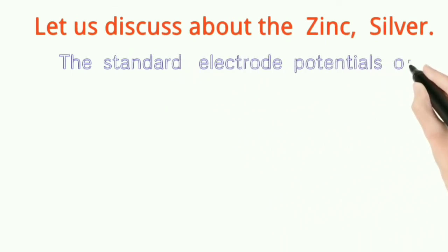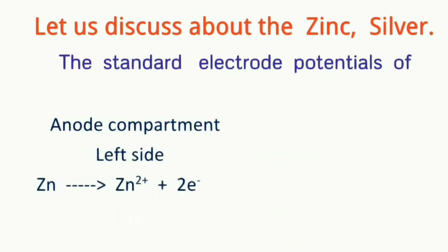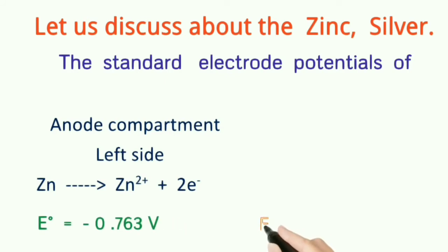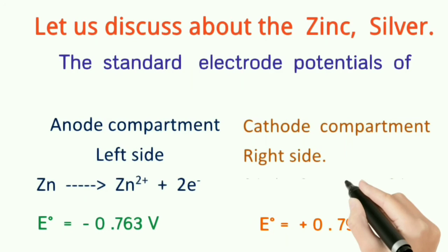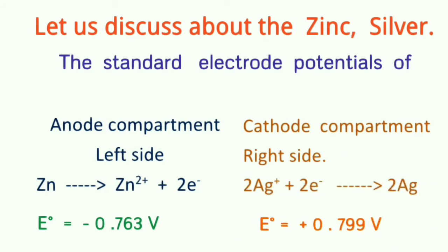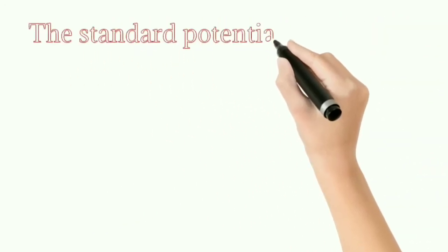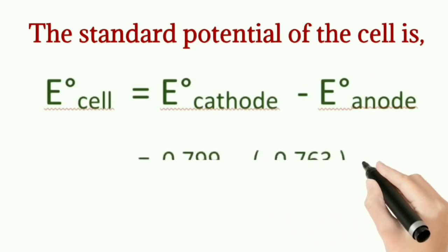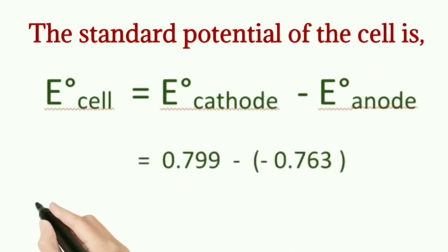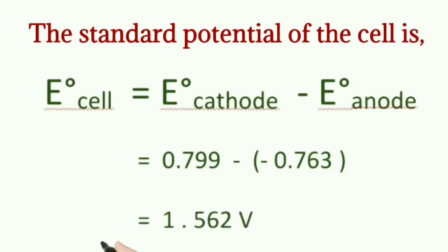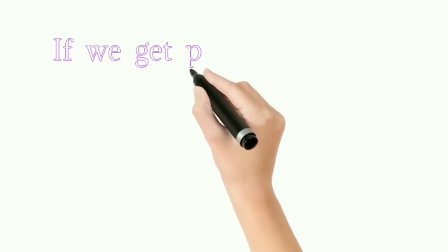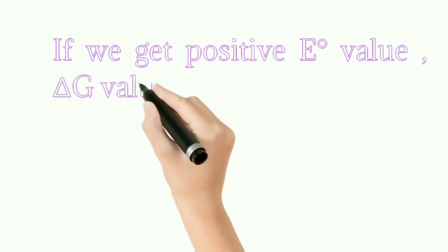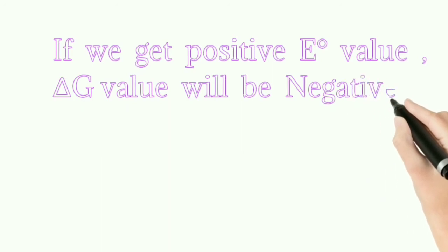For example: zinc and silver. Zinc is present above hydrogen in the electrochemical series and silver is below hydrogen. Zinc undergoes oxidation: Zn → Zn²⁺ + 2e⁻ (E° = −0.763 V). Silver gets reduced: Ag⁺ + e⁻ → Ag (E° = +0.799 V). The overall E° cell = 0.799 − (−0.763) = +1.562 V. Since E° is positive, ΔG° is negative and the reaction is spontaneous.